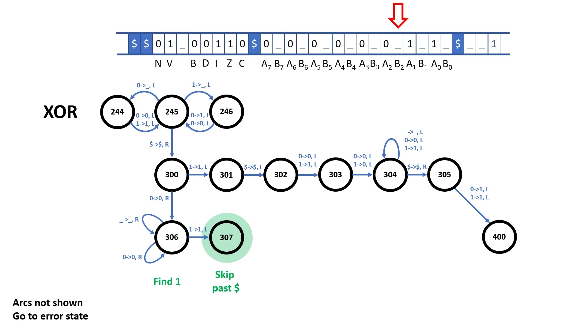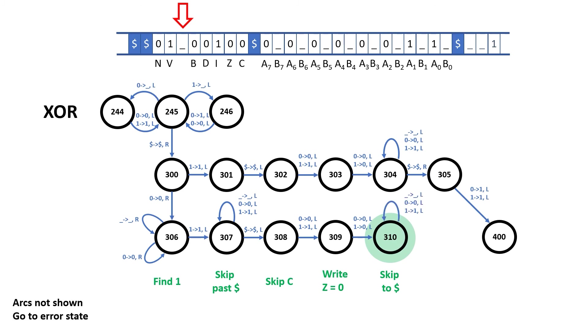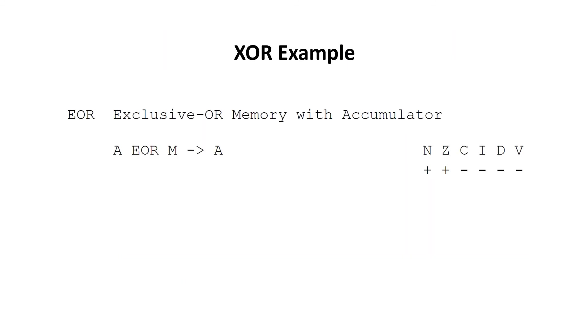Rule 307 has an arc that leads back into itself. And so it'll just skip over underscores, zeros, and ones, and wait until it finds the dollar symbol. We want to skip past the dollar symbol and skip past the carry flag. Now that we're at the zero flag, we read it, but we ignore that and just write a 0. We skip to the dollar just to the left of the negative flag. Then we come back one position and we write 0 into the negative flag.